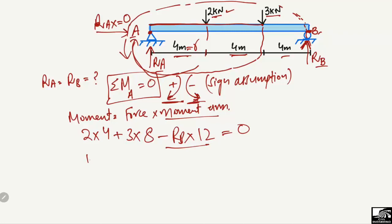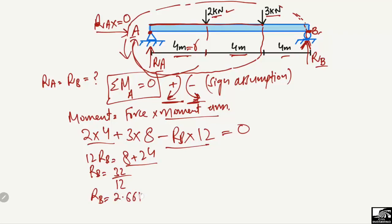Rearranging the equation: 12 RB = (2 × 4) + (3 × 8) = 8 + 24 = 32. Therefore RB = 32 ÷ 12 = 2.66 kN. This is the support reaction at B.